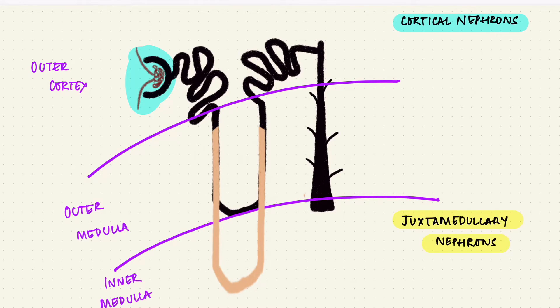They have specialized peritubular capillaries which follow the loop of Henle and they're called the vasa recta. The significance here is that the cortical nephrons form urine but the juxtamedullary nephrons are needed for concentrating the urine.